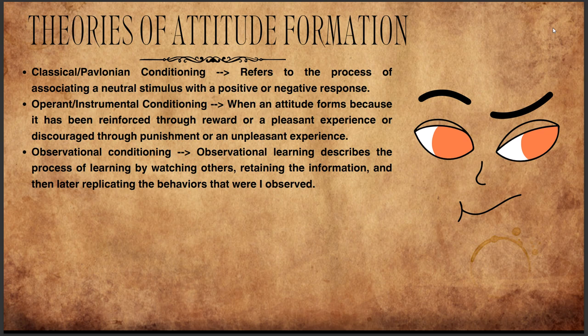The next is operant or instrumental conditioning. An attitude forms because it has been reinforced through reward or a pleasant experience, or discouraged through punishment or an unpleasant experience. For example, someone might develop a positive attitude towards exercise after experiencing the pleasant rewards of a healthy body through regular exercise, such as improved health and mood.